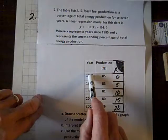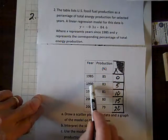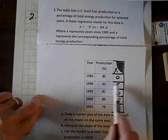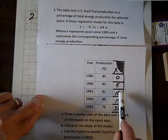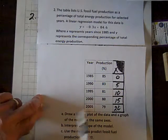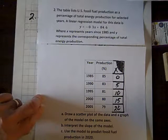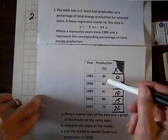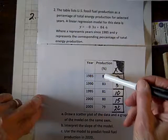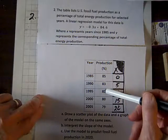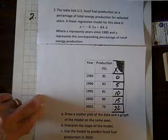So, how many years from 85 to 85? Zero. From 85 to 95? Ten, and so on. And Y represents the corresponding percentage of total energy production. This is 85%, 83%, the percentage of total energy production.